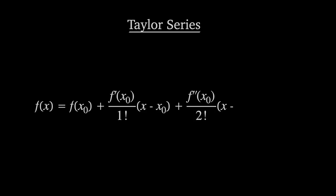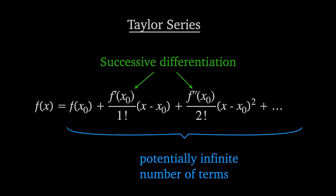So Taylor series approximates a function close to a point x0. The formula relies on successive derivatives of the function, which are divided by successive factorials. A legitimate discovery of Taylor series would require not only figuring out the formula itself, but also recognizing the potentially infinite number of terms it can have.